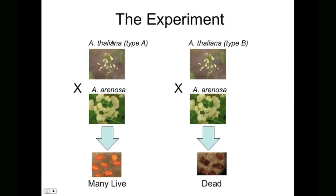For this experiment, the researchers took one ecotype, we'll call it type A, crossed with arenosa, and observed that many of the seeds were still alive. Conversely, a different ecotype, we'll call it type B, crossed with arenosa, has very few viable seeds. So the question is: what gene expression differences exist between these two crosses that might explain the differences in seed viability?